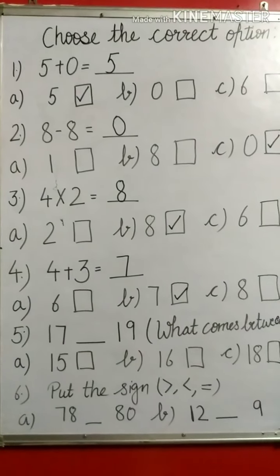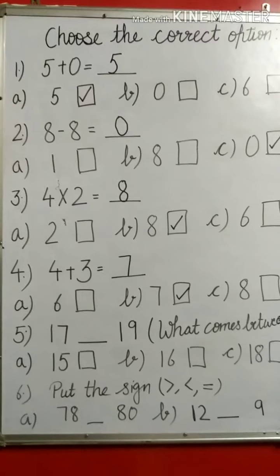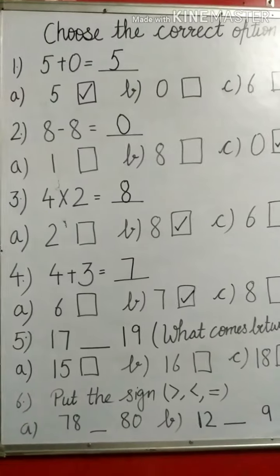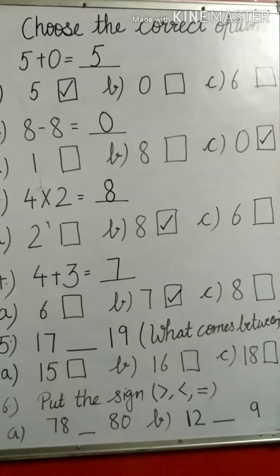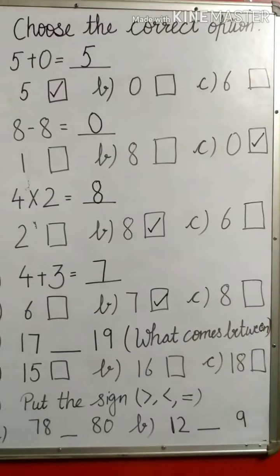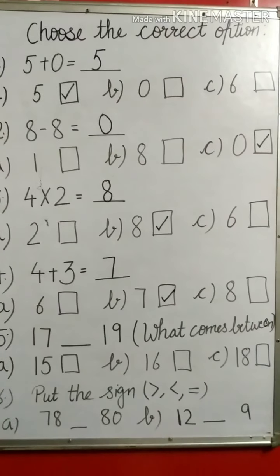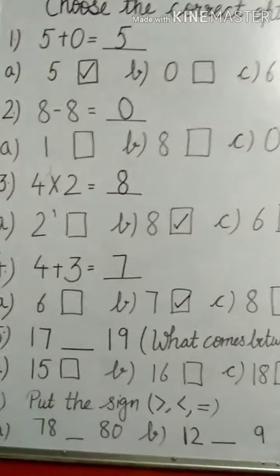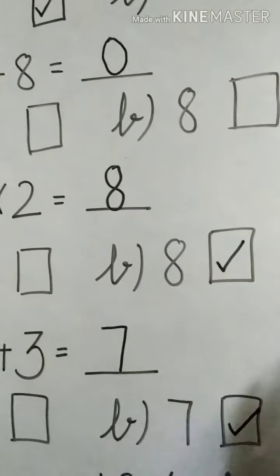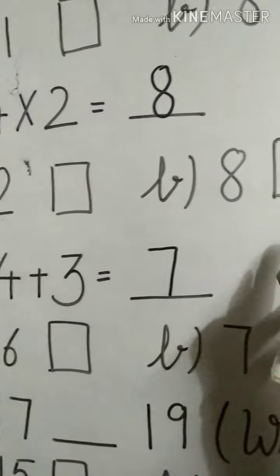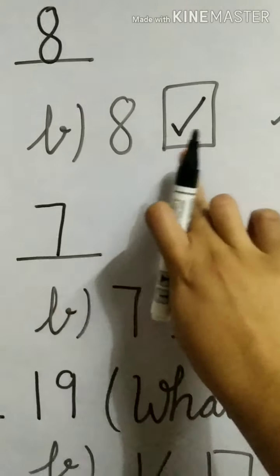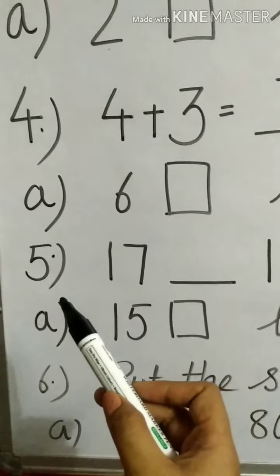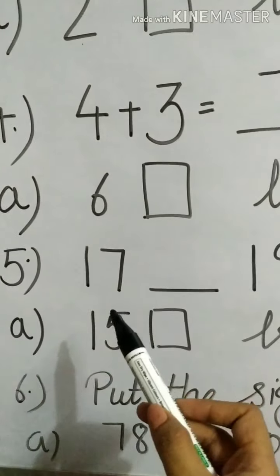We have done till question 4, and as you can see, I am ticking against only the correct option. This is the way, my dear students, to choose the correct option — whenever you are given with options, we choose the correct one. We need not put any crosses or draw anything in the other boxes. We are simply putting the tick against the correct option.